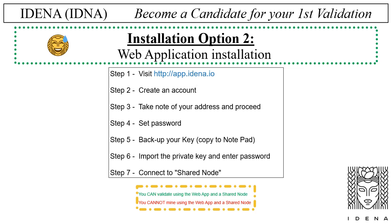Step 6: import the private key and enter password. Step 7: connect to shared node. Let's see an example of the web app setup.